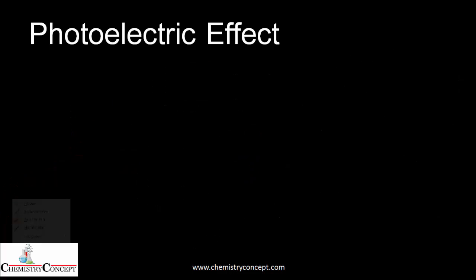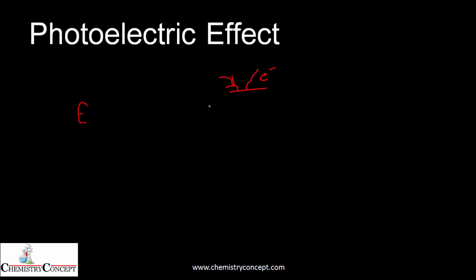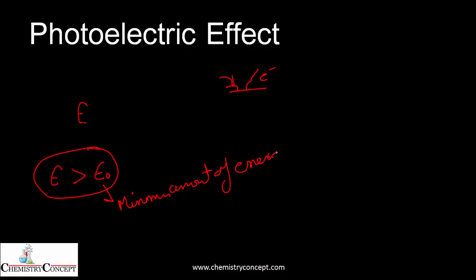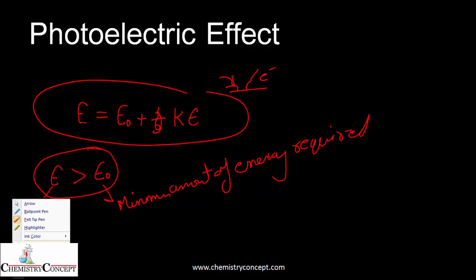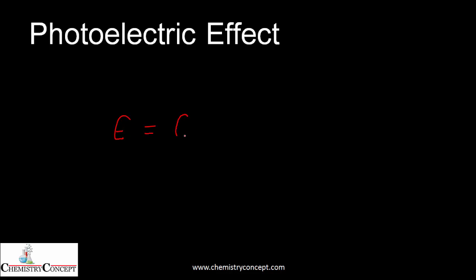Now if we provide energy to the metal surface, electrons will come out. But if the energy given is greater than the threshold energy — the minimum amount of energy required — this energy is split into two parts: first, the minimum amount of energy required for the electron to come out, and then the remaining energy is converted into kinetic energy of the photoelectrons.